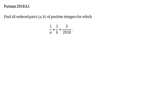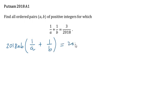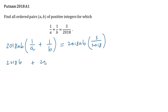This type of problem is usually solved by factoring. I will multiply both sides of the equation by 2018AB to clear all denominators. So we have 2018AB × (1/A + 1/B) = 2018AB × (3/2018), which is equivalent to 2018B + 2018A = 3AB.